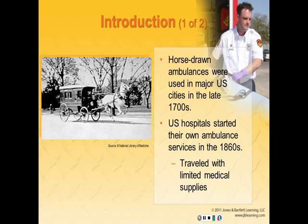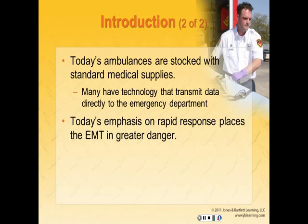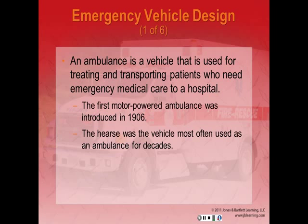Horse-drawn ambulances were used in major U.S. cities in the late 1700s. United States hospitals started their own ambulance services in the 1860s and ambulance attendants traveled with limited medical supplies — a very primitive time in medicine. Today's ambulances are stocked with standard medical supplies and many are equipped with technology that can transmit data directly to the emergency department.